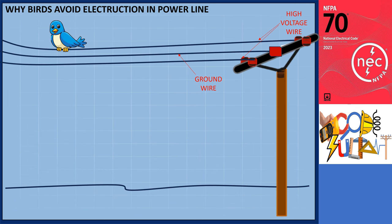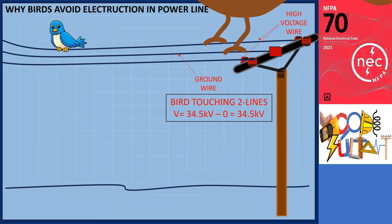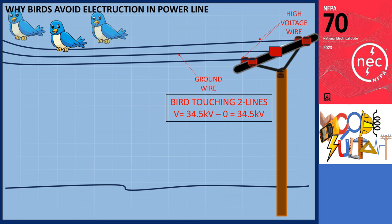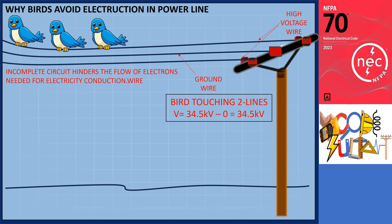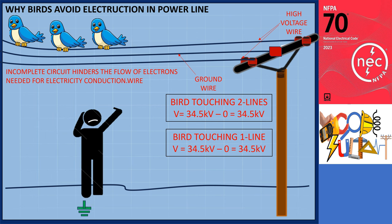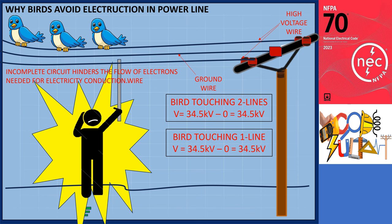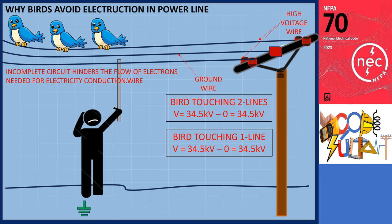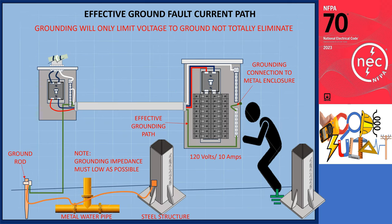Why don't birds get electrocuted on power lines? If a bird had one foot on the wire and the other foot on the ground or a wire with lower voltage, it would be electrocuted, because it would act as a conductor for current to flow from high voltage to low voltage. When a bird sits on a single wire, the incomplete circuit hinders electron flow, and the potential difference across all points on the wire is zero. Similarly, a person standing on the ground completes the circuit and is electrocuted when contacting the wire. Grounding helps limit the touch potential or step potential, not eliminate it.